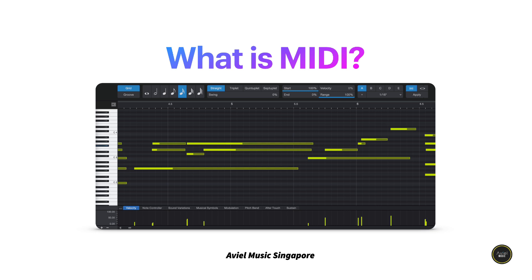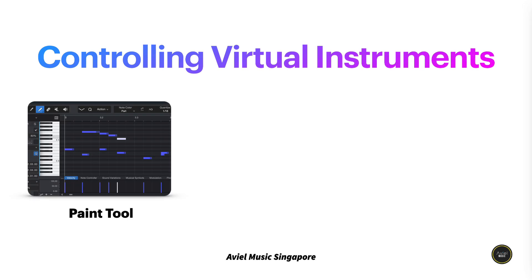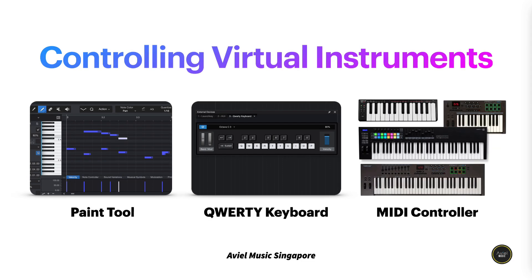Now that you know what MIDI is and how it works, let's dive into how we can use it in Studio One Prime to create music. There are a few ways to use MIDI to control virtual instruments. The first, very manual way is through the pen tool. Another way is to use the quality keyboard, which is your on-screen keyboard. If you don't have a MIDI controller, you can still use your computer keyboard to create notes for the virtual instrument.